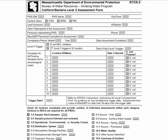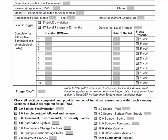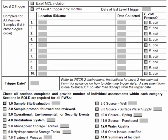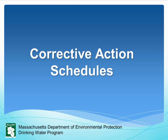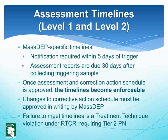Here is what the beginning of the Level 2 assessment form looks like. Just like the Level 1 form, basic system information is required, and there are multiple sections to complete. The bold sections at the bottom of the page are required of all PWSs. Regarding corrective action schedules and timelines: notification is required within five days of triggering an assessment, but a system should not wait until the last day since assessment reports are due 30 days from the triggering sample collection date. Once the assessment and proposed corrective action schedule is approved, the timelines become enforceable. Any changes must be approved in writing by MassDEP. Failure to meet timelines is a treatment technique violation under the RTCR, requiring Tier 2 public notification.